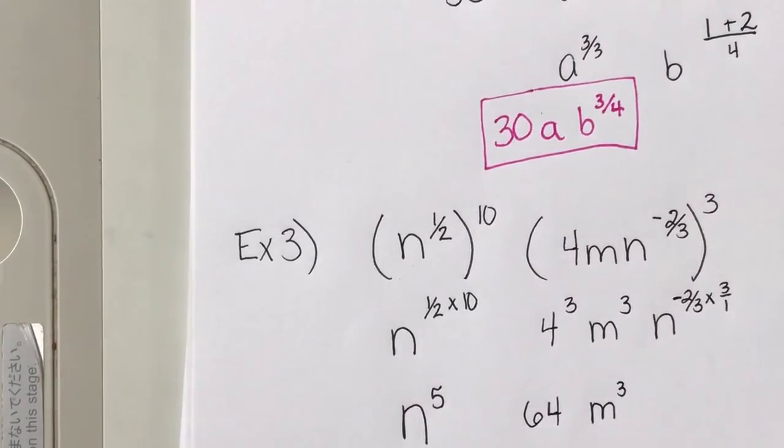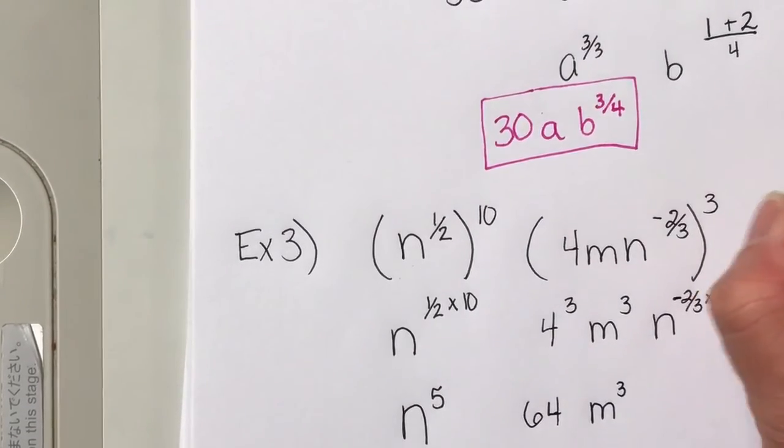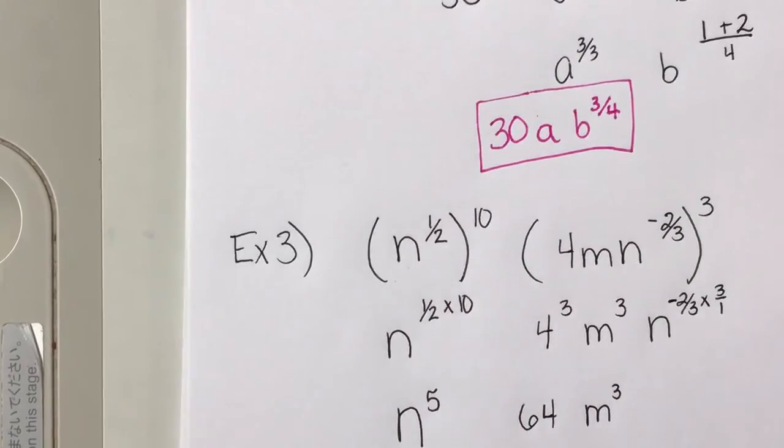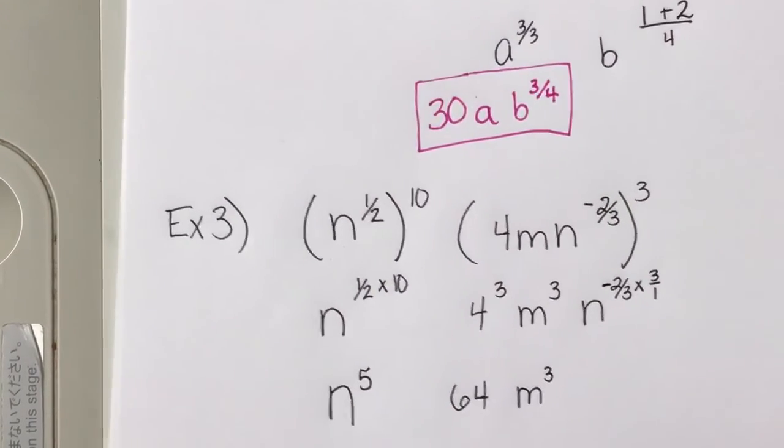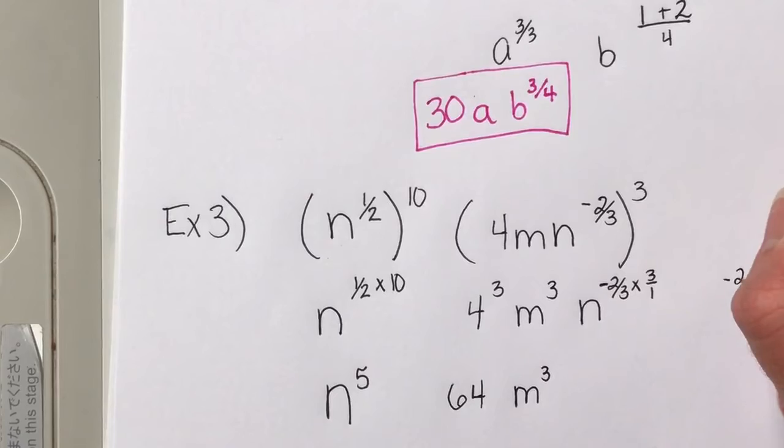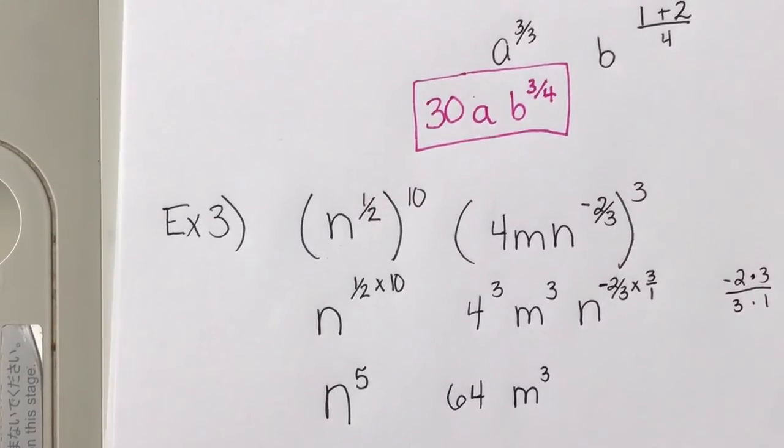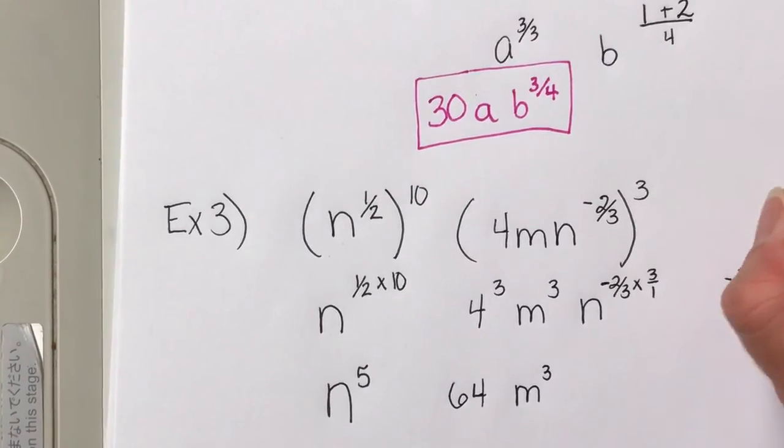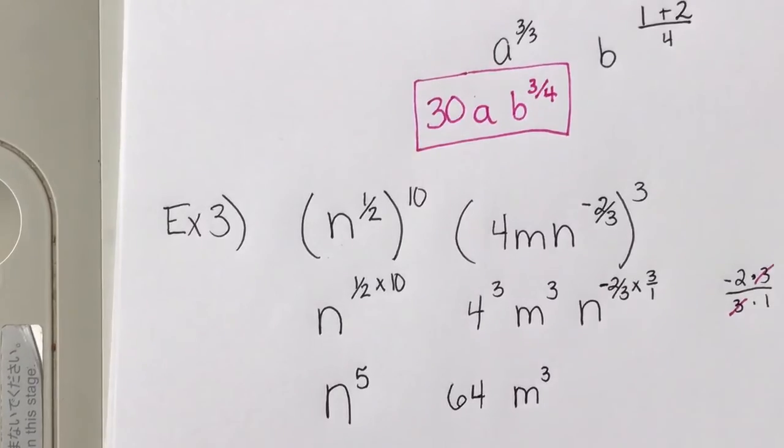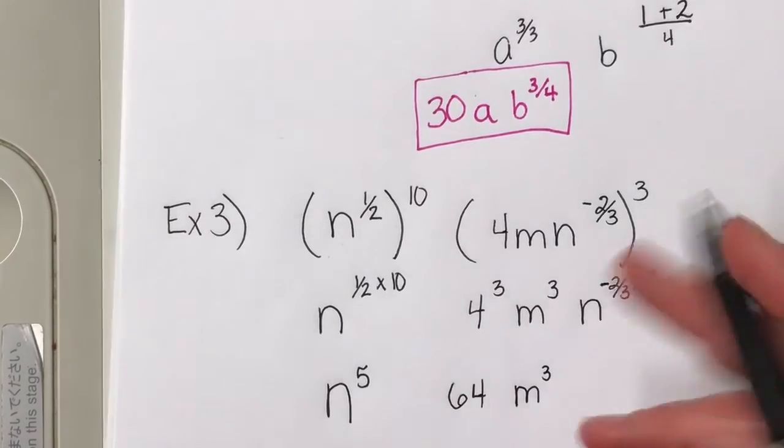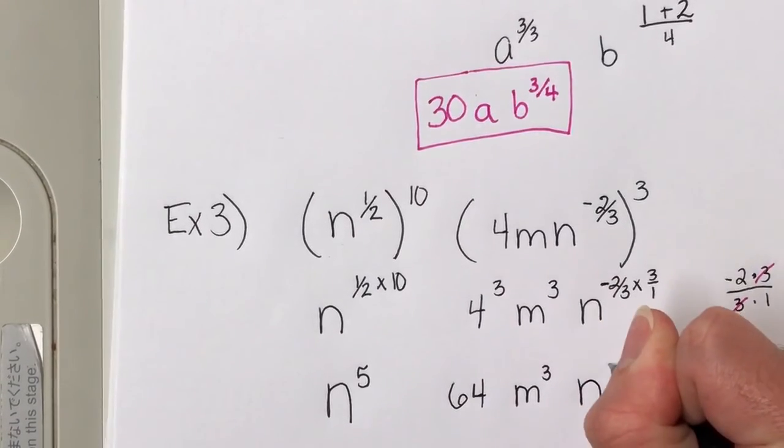Well, if you go back to multiplying fractions, negative 2 times 3 over 3 times 1. And like we said before, those 3s will cancel each other out, leaving me with a negative 2. So this becomes n to the negative 2.